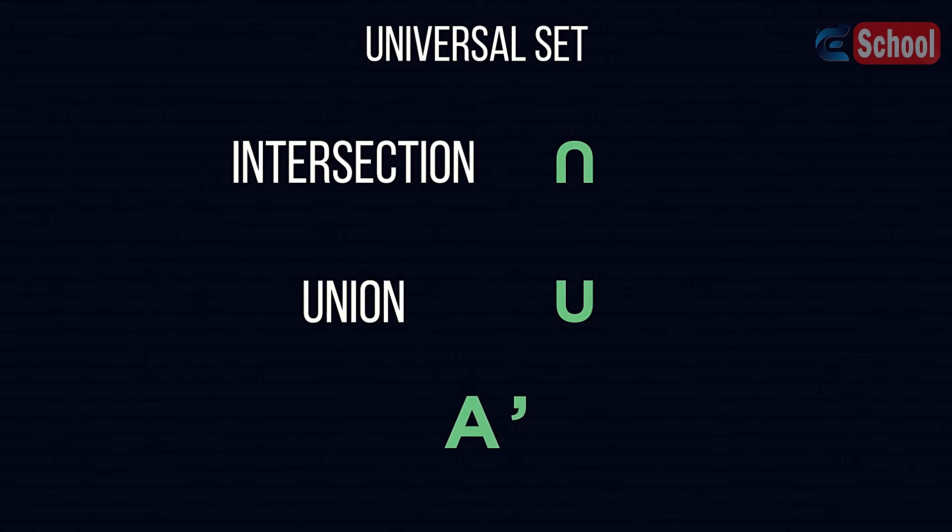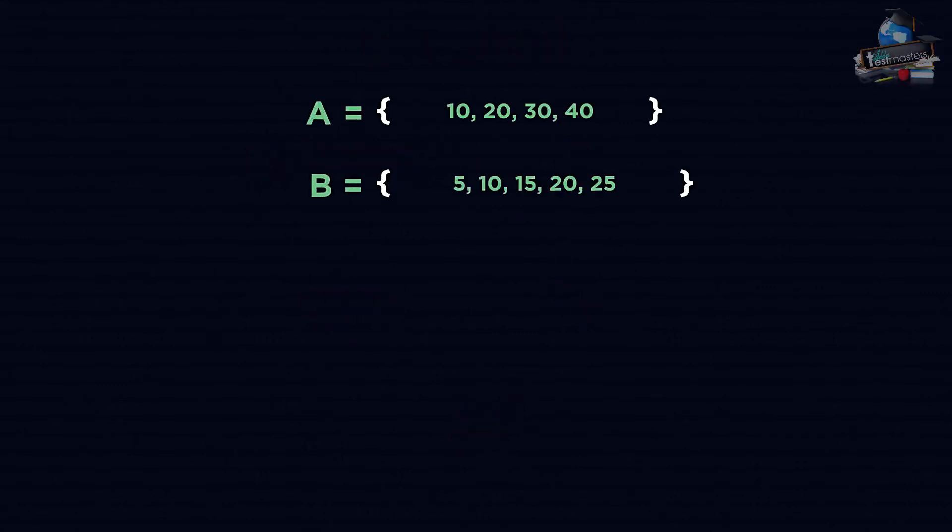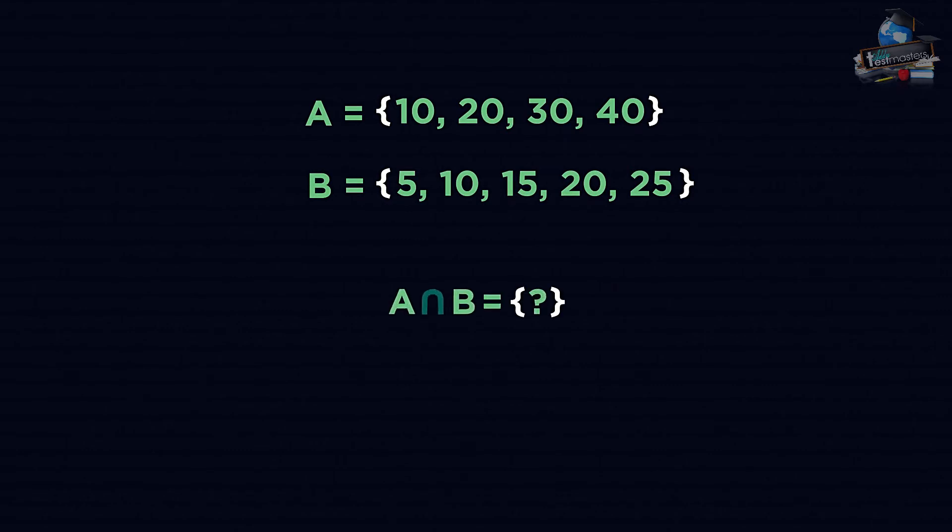Let's see an example. Look at sets A and B. To find the set A intersection B, we are looking for values which appear in both. Pause the video and see if you can identify it. The shared values are 10 and 20, so A intersection B would look like this.